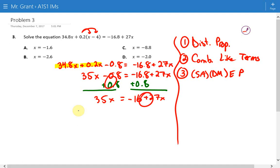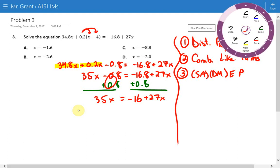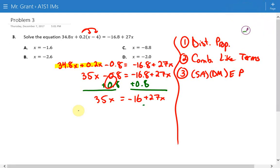We still have more addition and subtraction. We want to keep adding and subtracting until you get all the x's to one side and everything without an x to the other. I'm going to suggest that we subtract 27x from both sides. When we do that, we end up with 8x = -16.